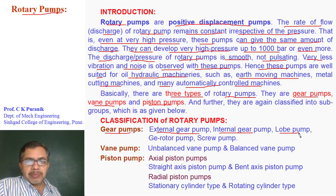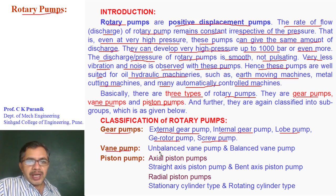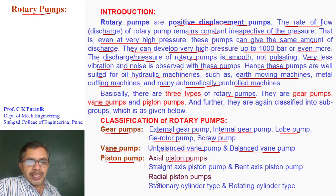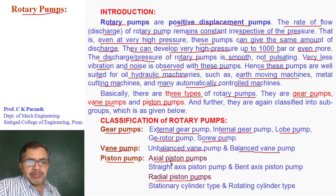Further classification of gear pumps includes external gear pump, internal gear pump, lobe pump, g-rotor pump, and screw pump. Vane pumps are classified as unbalanced vane pump and balanced vane pump. Piston pumps are classified as axial piston pump and radial piston pump.